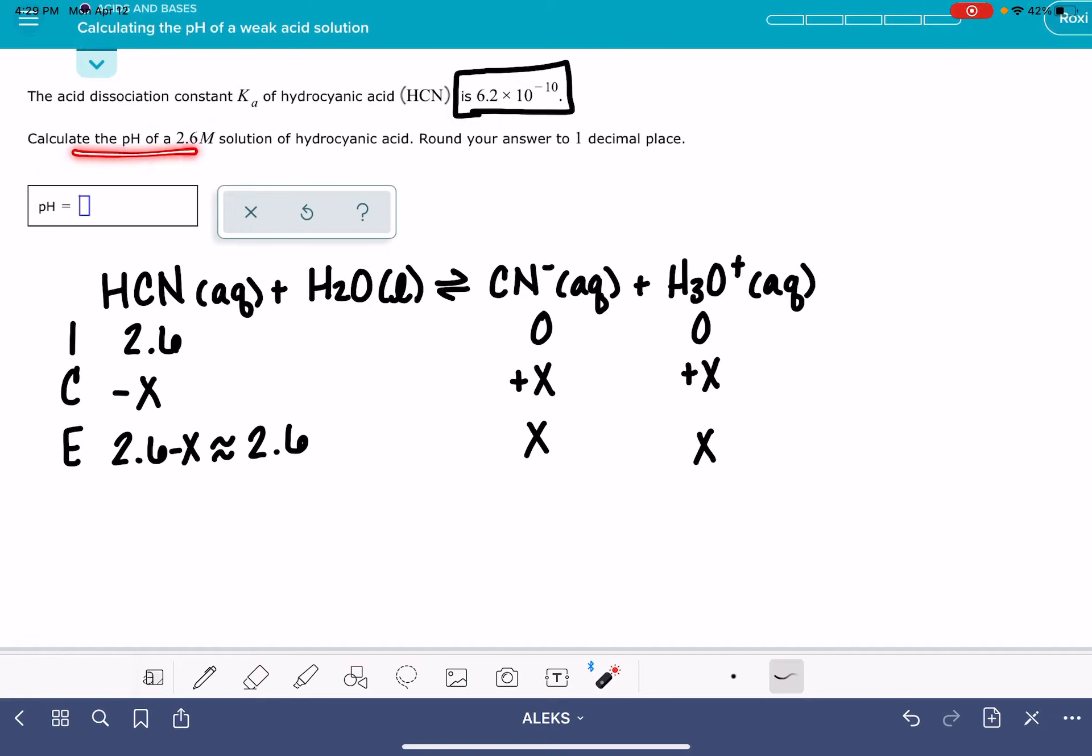To calculate the pH, we're going to use this equation: pH equals the negative log of the H3O plus concentration. In the ice table, the H3O plus concentration is right here. It is our X value. So we need to know X. That's what we're going to plug into the pH equation. To solve for X, we need to set up an equilibrium expression.